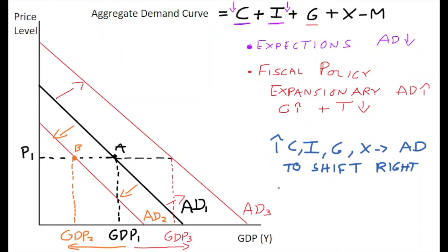However, if there is a decrease in any of these, if there is a decrease in consumption, investment, government spending, or exports, what we do to model this for these four here is we shift the aggregate demand curve to the left. So we have a leftward shift in aggregate demand to represent a decrease.